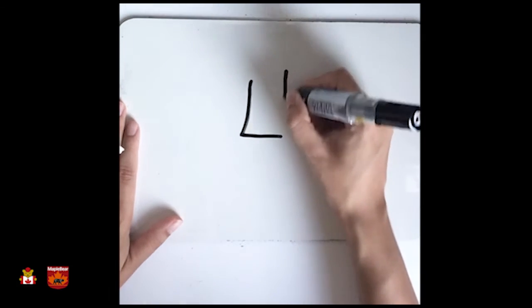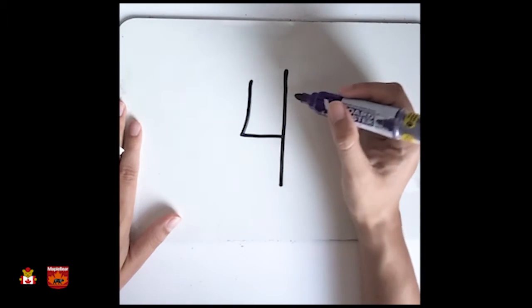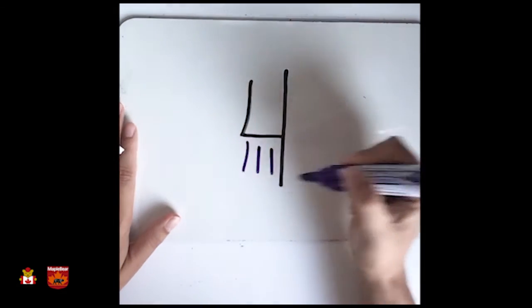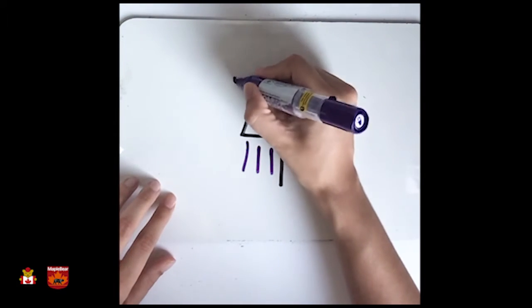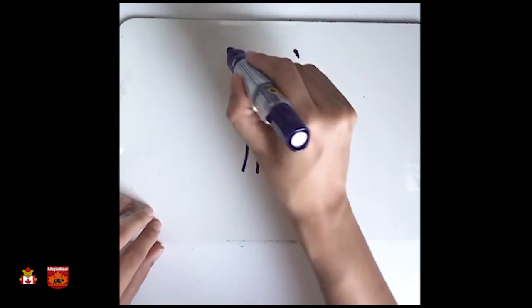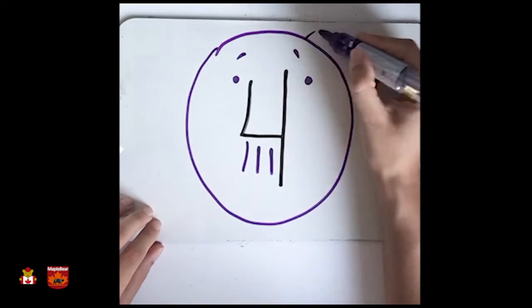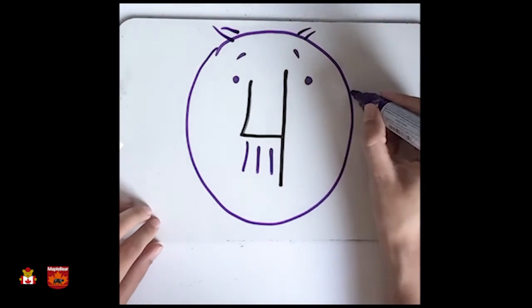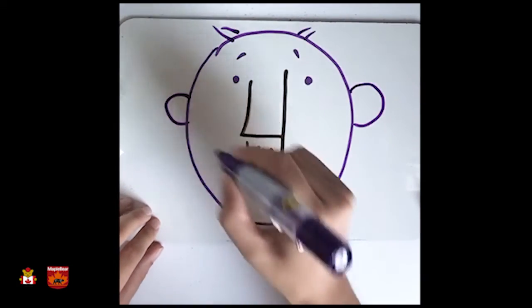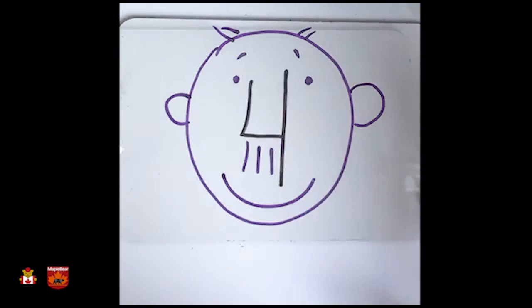Next number, number four. Number four is really similar to number three. So look. Here, I'm going to start. Then I do two little circles here. Let's see if you know what is this. The hair, ears, and a big mouth. So I transformed number four.